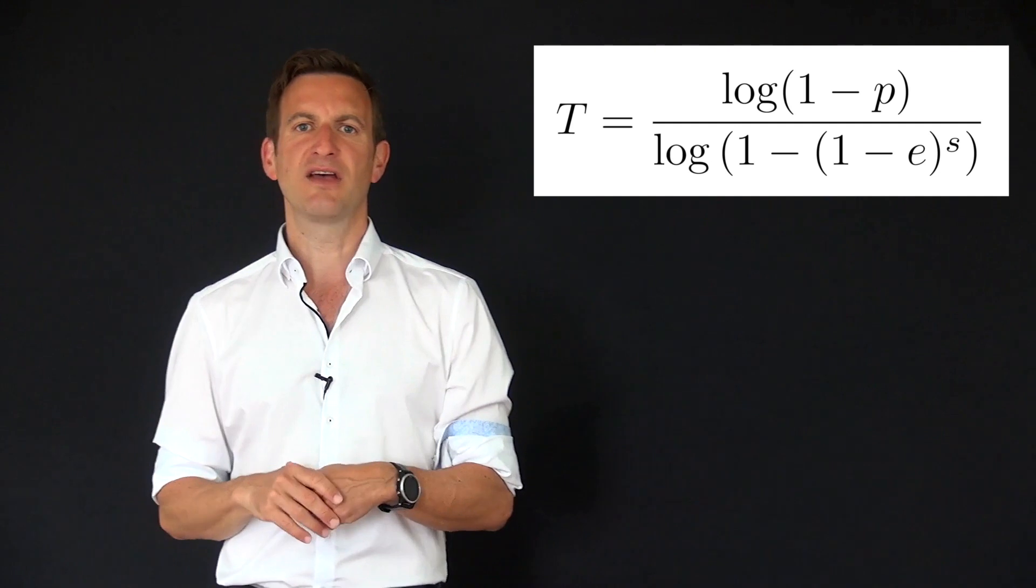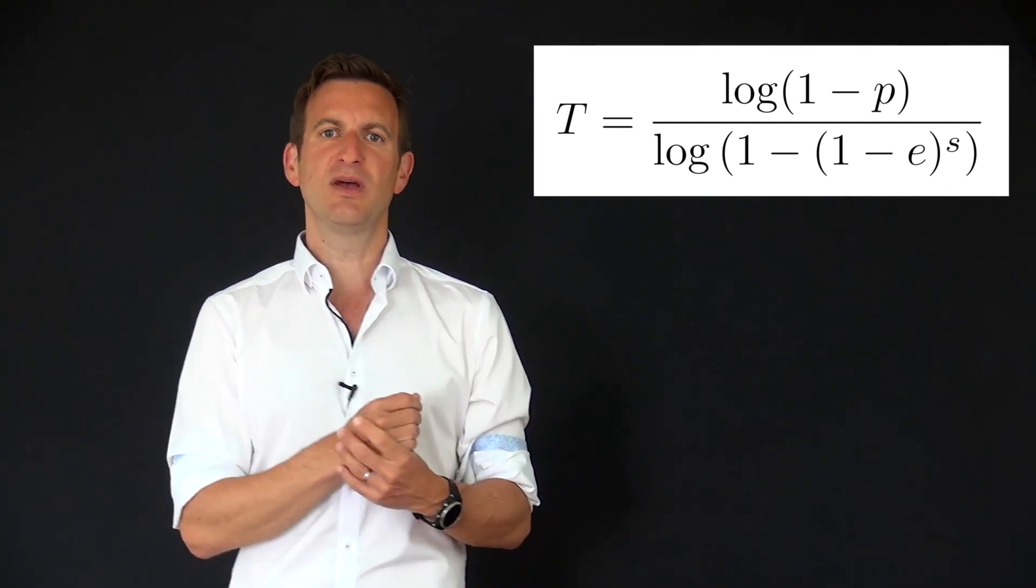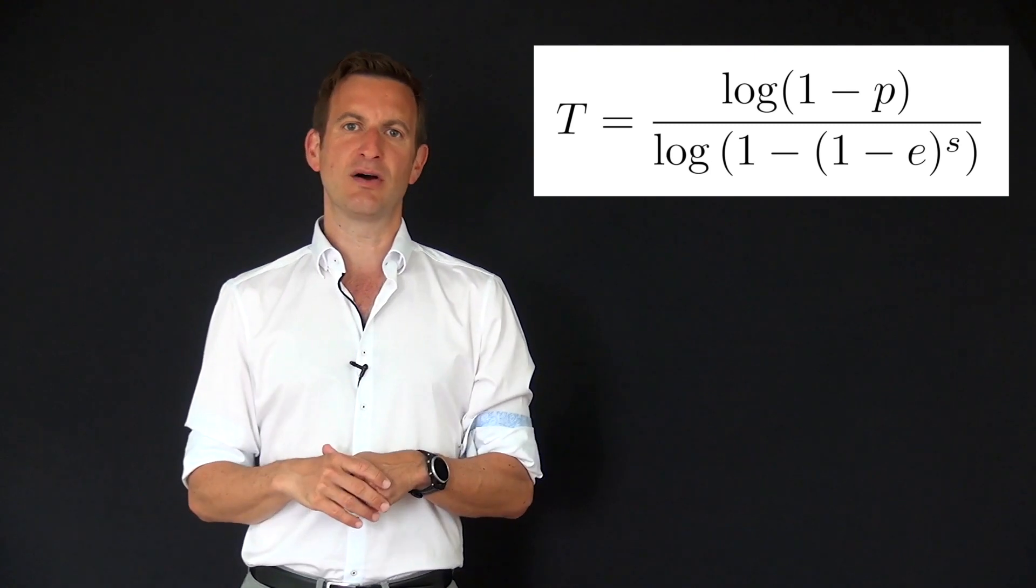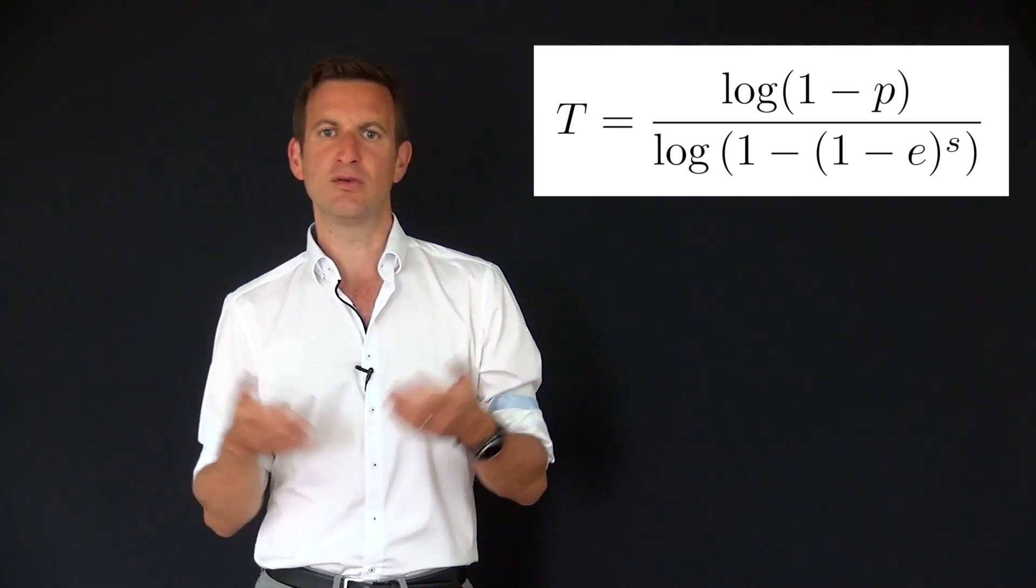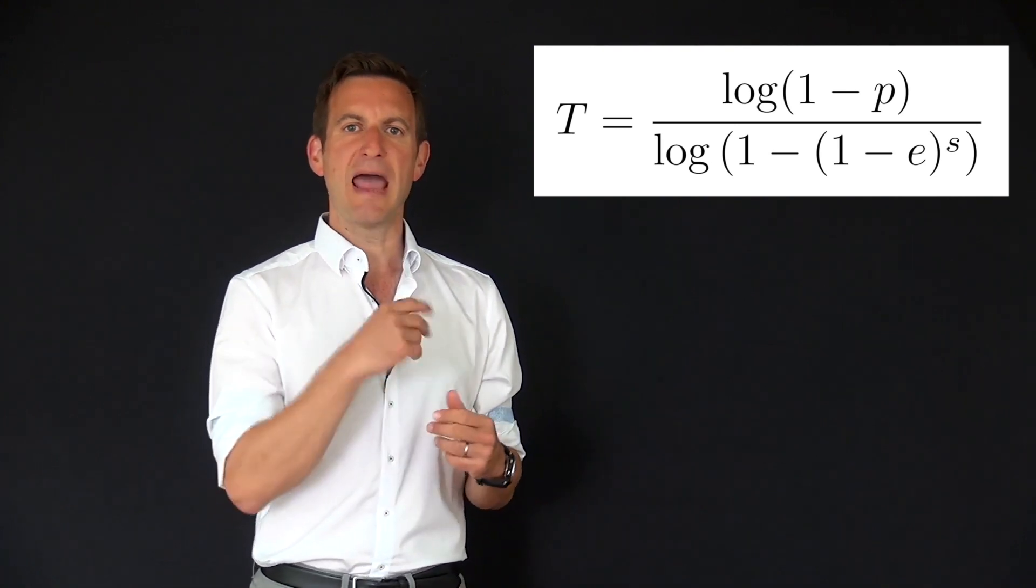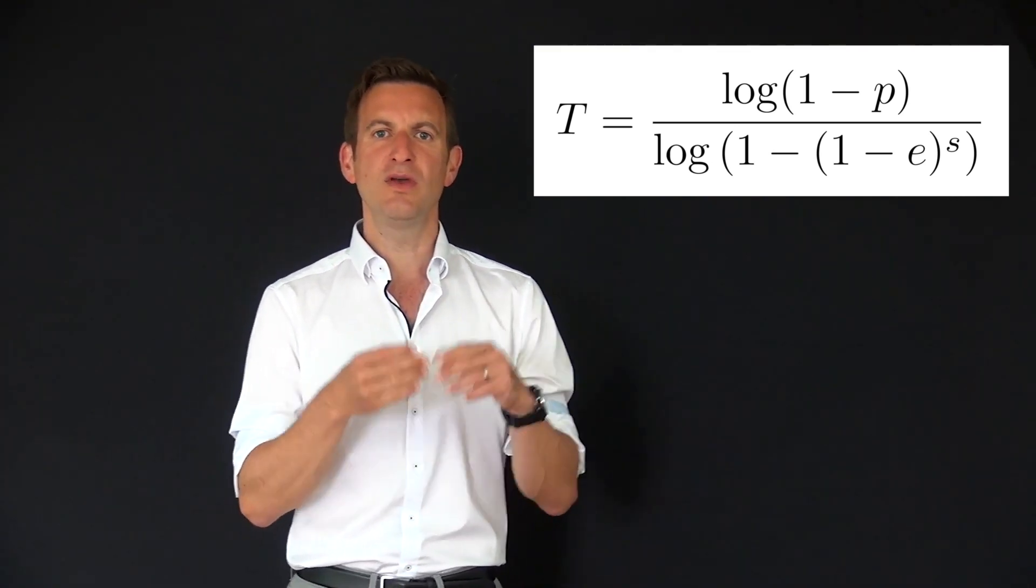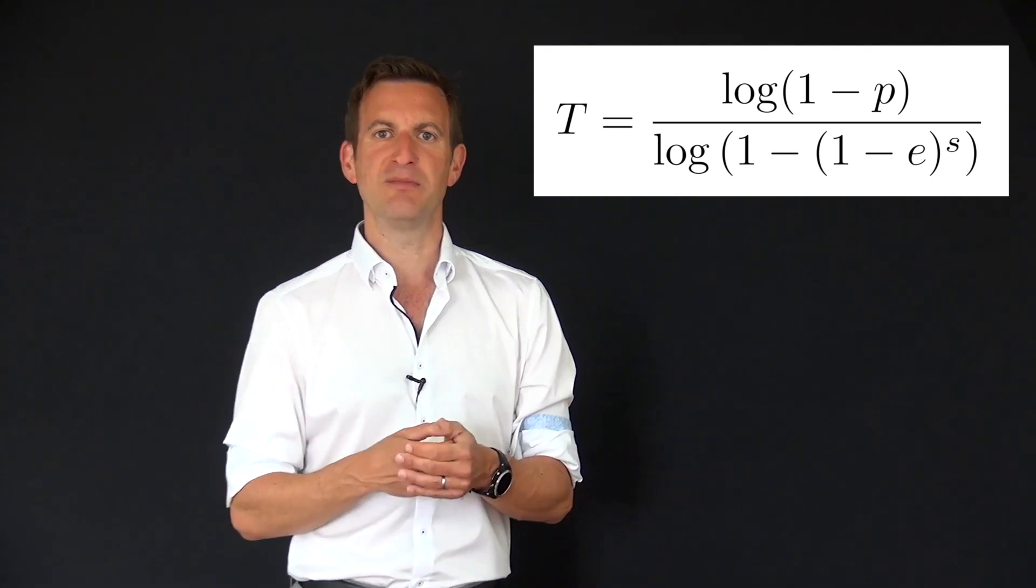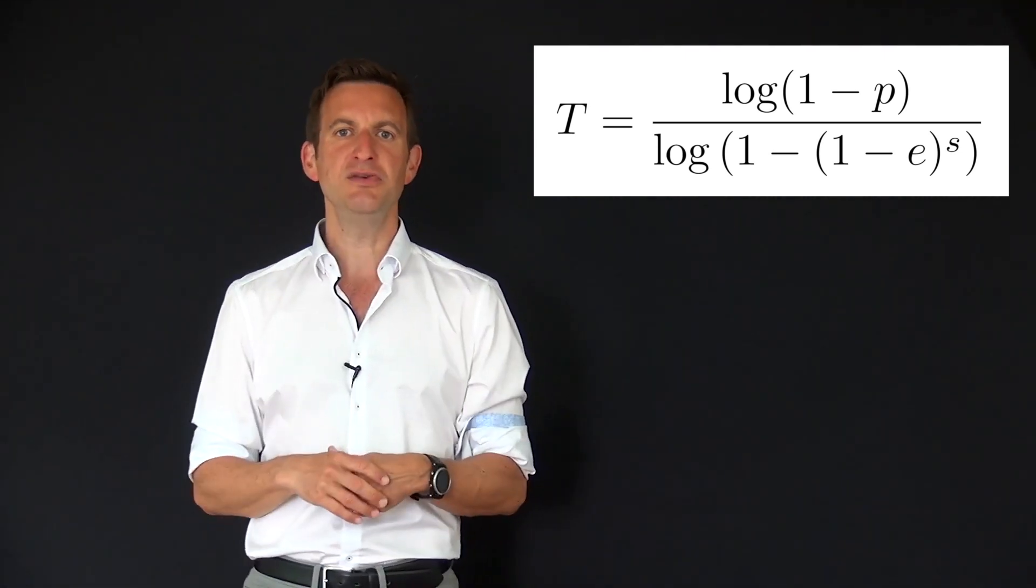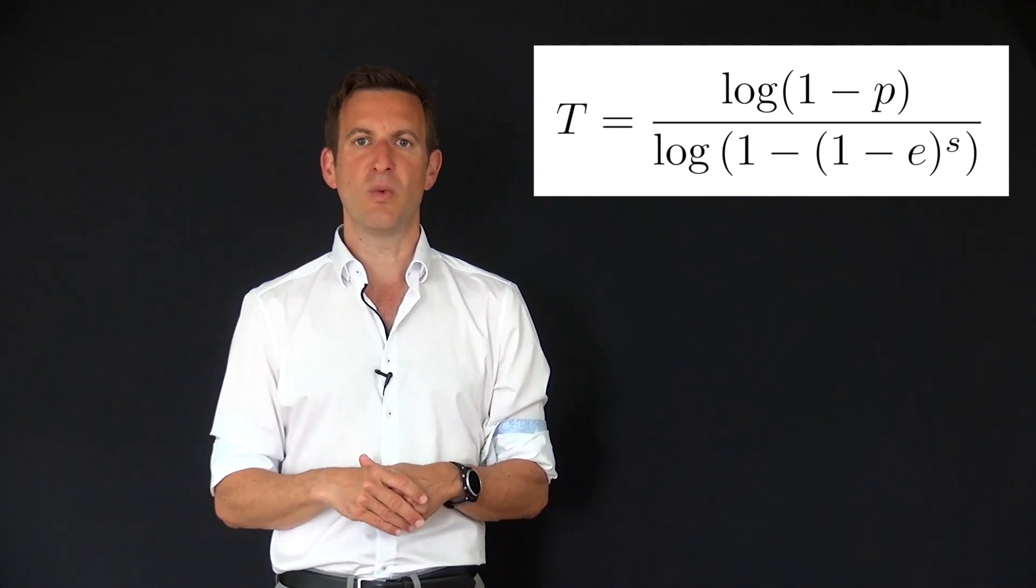then this formula tells us that if you want to succeed with probability P and the outlier ratio in our data points is E, so let's say 20% or 40% or 60%, and we need to sample S points in order to compute my model, so in our example this would have been 2, then this formula tells you how many trials T you need in order to succeed with probability P.